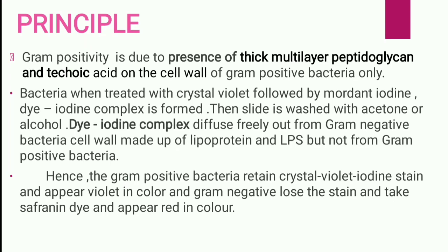When the bacteria are treated with crystal violet followed by mordant iodine, dye-iodine complexes form. When the slide is then treated with acetone or alcohol, the dye-iodine complex diffuses freely out from gram-negative bacteria cell wall forming pores on it, whereas gram-positive bacteria retain crystal violet iodine stain and appear violet in color, and gram-negative lose their primary stain and take safranin, the counter stain, and appear red in color.